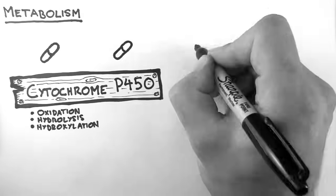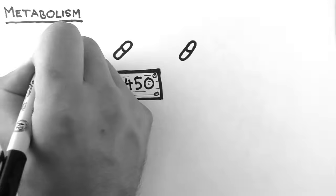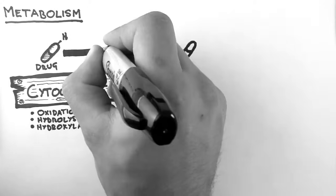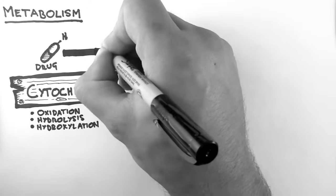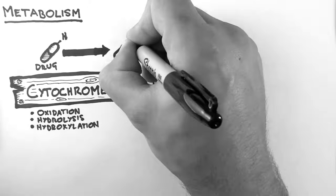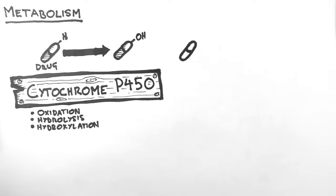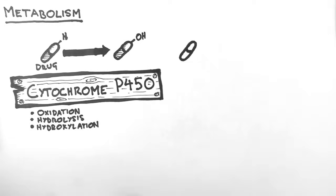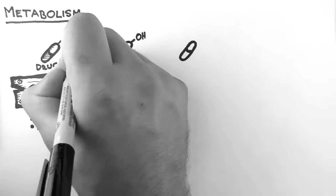Here is a drug, and this drug has a hydrogen attached to it. This hydrogen is going to be the target of our cytochrome P450 enzyme. Through the process of hydroxylation, the cytochrome P450 enzyme has turned the hydrogen into a hydroxyl group.